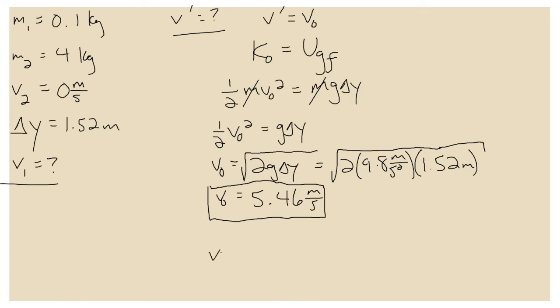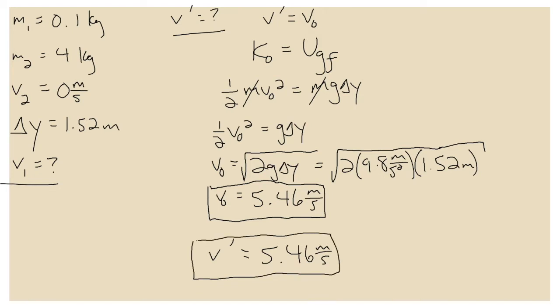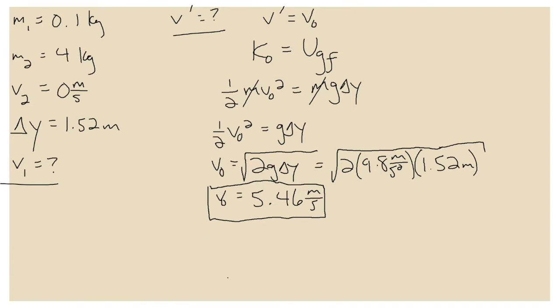The V' for the momentum problem is the V0 for the energy problem, so that number is also 5.46 meters per second. Now that we have that, we're ready to do our momentum analysis.